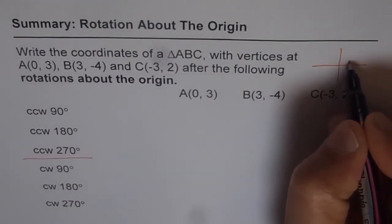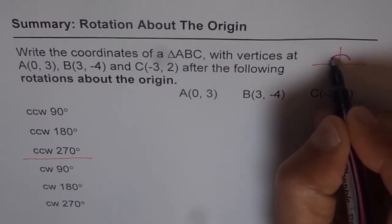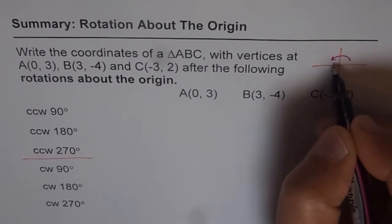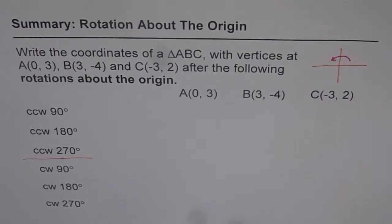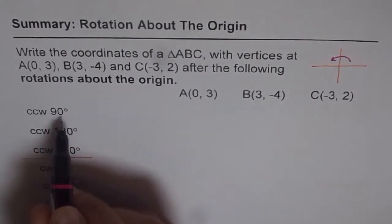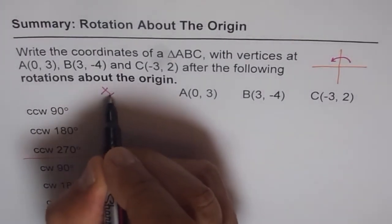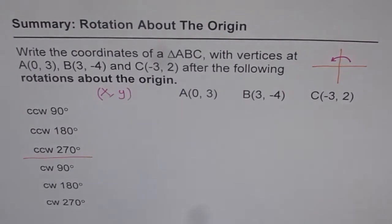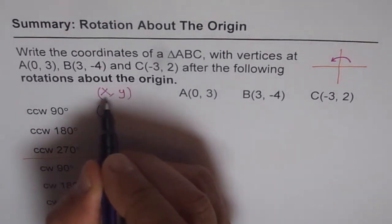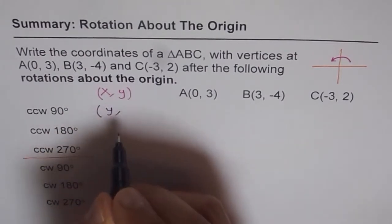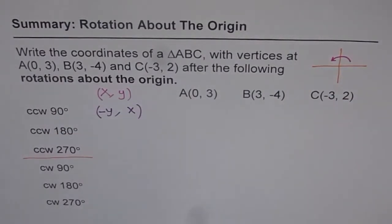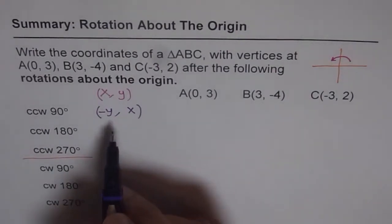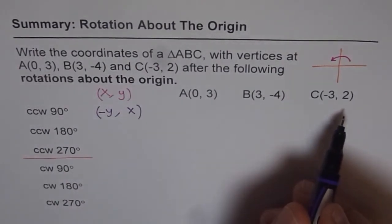When you do counter-clockwise, a point moves in that direction. X and Y swap, and the value of X becomes negative. So in general, when you do 90 degrees counter-clockwise, if you are starting with a point (x, y), then X and Y will swap — Y value comes to the X position and X goes to Y — and the new X value becomes negative. That is the change which is going to happen.